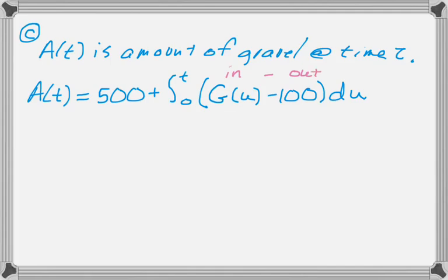G is the rate at which it's coming into the plant, and 100 is the rate at which it's being processed, kind of leaving the plant. So, we're integrating the rate in minus the rate out, which is a very common thing to do.